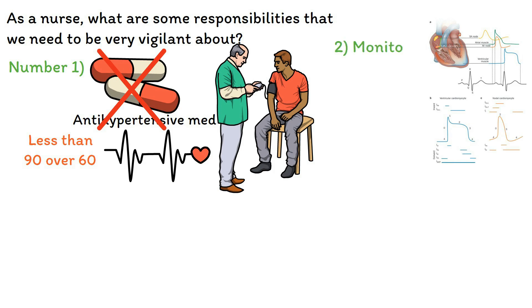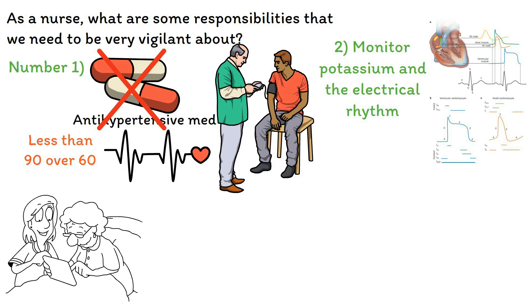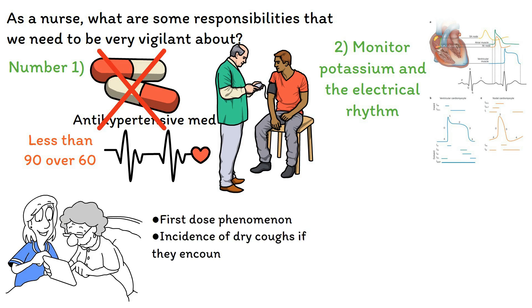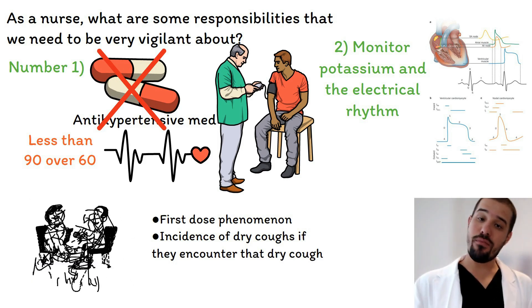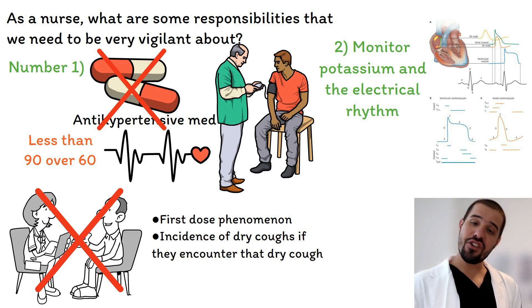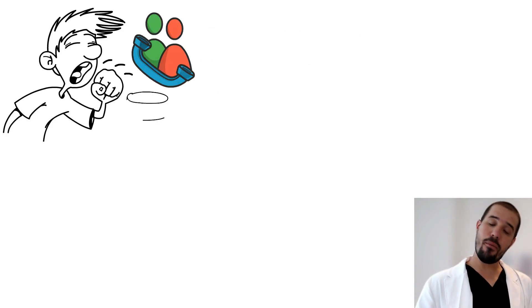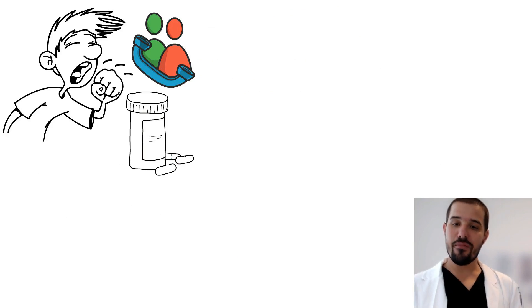Monitor potassium and the electrical rhythm, specifically for peaked T waves. Educate your patients about not only the first dose phenomenon but also the incidence of dry cough. If they don't report a dry cough to us or the medical provider, they cannot be assisted. Educate them: if you experience a dry cough, please contact the healthcare clinic or report it to your provider so we can switch you to an alternative medication.